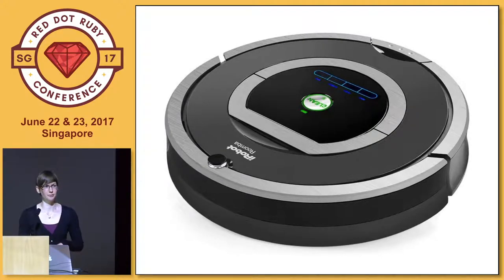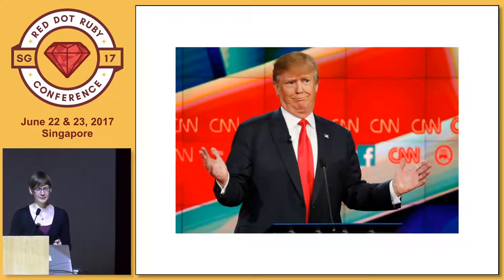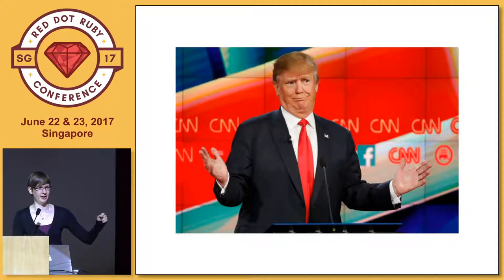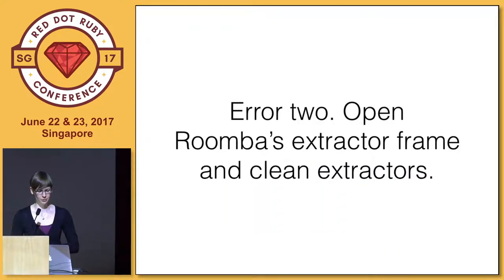I pushed this button and it started speaking to me in Japanese. I can speak some Japanese, but it's not that great. I pushed the button a couple more times and finally figured out it was trying to say something about error two. So I deployed another time-tested method, which is Googling the error message. And this is what I got: error two — open Roomba's extractor frame and clean extractors. And eventually I figured out what it actually wanted me to do was to clean the brushes.